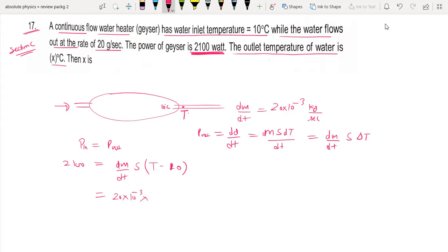And this is equal to 200, this is equal to 2. So T minus 10 is equal to 10 to the power 3 upon 40, this is equal to 25.